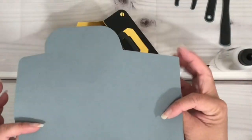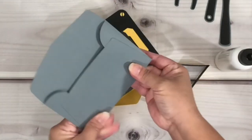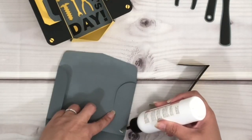Next is the envelope. Again, fold where the score lines are, add glue and finish the rest.